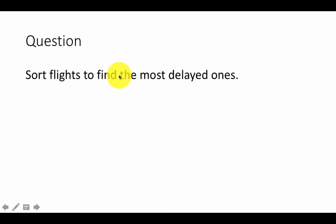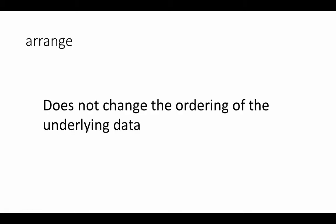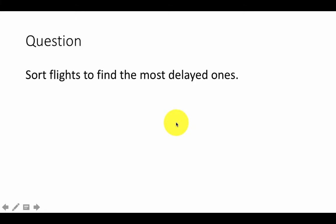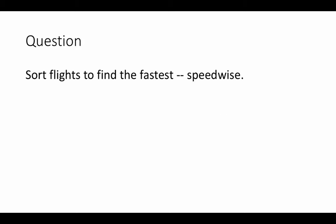Arrange does not change the ordering of the underlying data. Let's look at some example applications of the arrange function — sort the flights to find the most delayed ones. You sort in descending order of arrival delay, so the top entries in the output will be the ones with the highest delays. Arranging flights by descending order of arrival delay will show the most delayed ones first. Just try it out, see the results, and then move on.